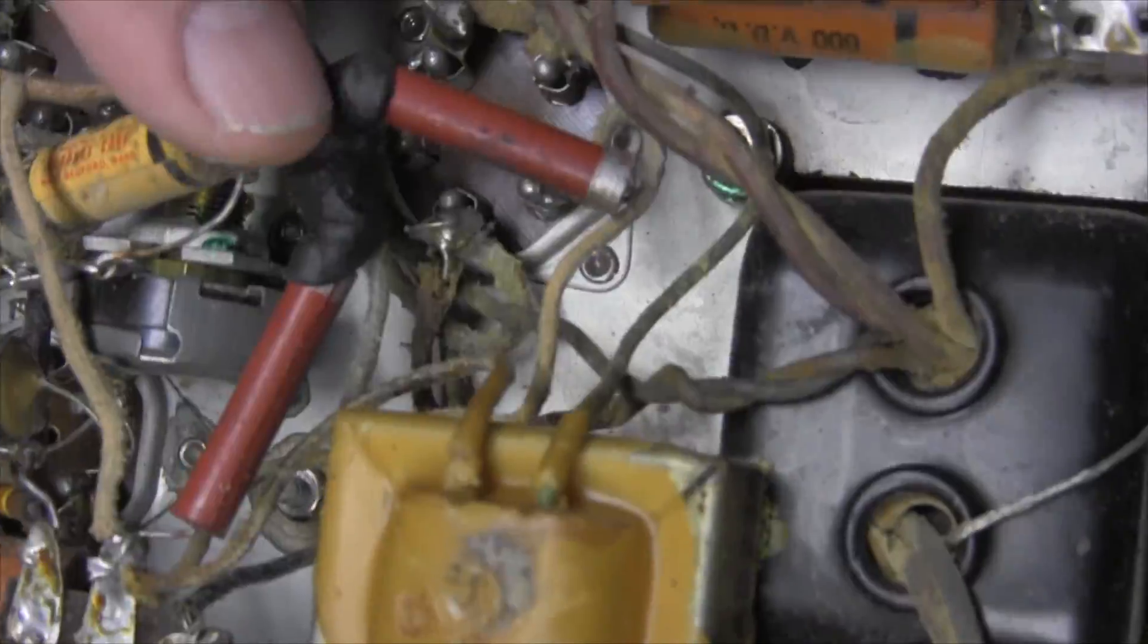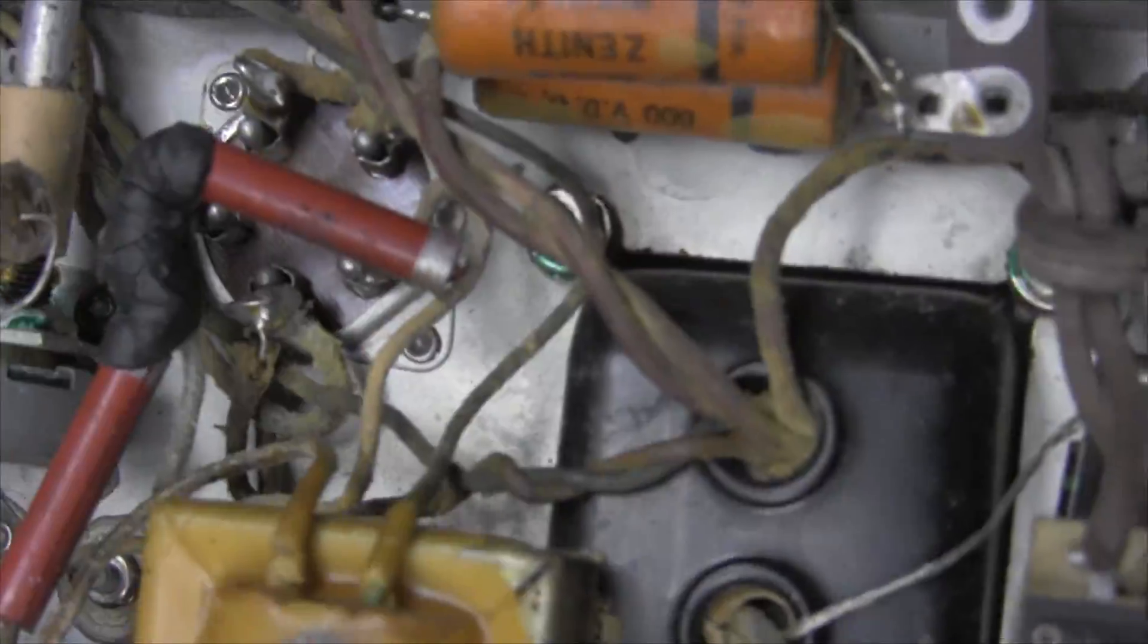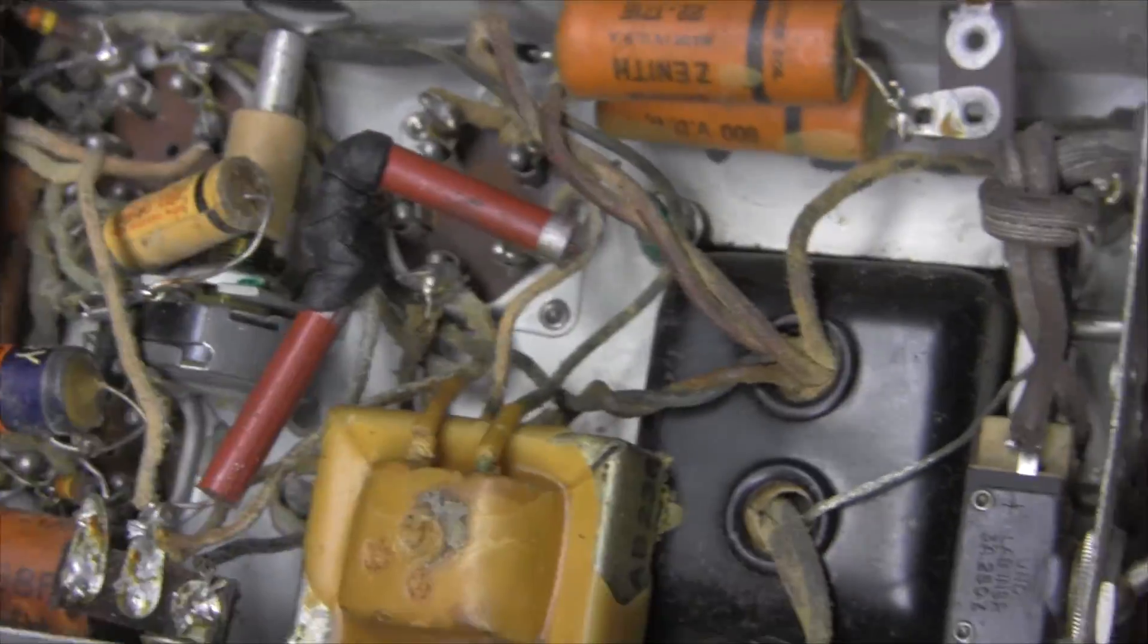Well, there's a pot in it. That's wired as the volume control. Plate of that tube, volume control. This goes to the grid. That goes to ground. It's a very straightforward little amp.